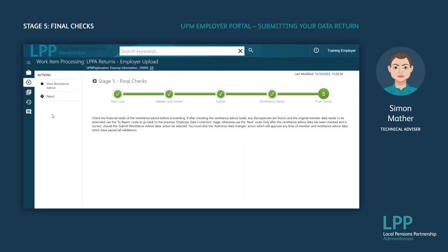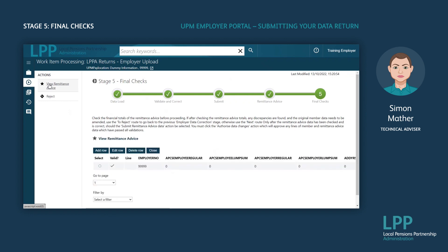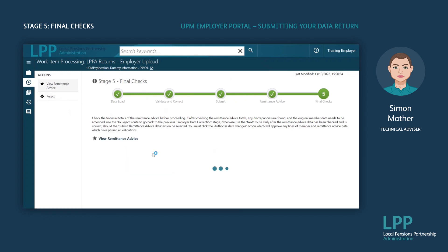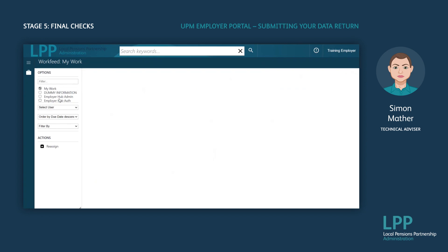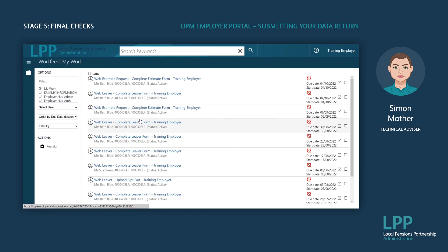This is the final step of the process. You will need to click on 'View Remittance Advice' in the actions column, then click Close, then click 'Submit Remittance Advice' in your actions column, followed by 'Submit to the Pension Fund'. This will take you back to your work feed, which means the upload process is complete and LPPA will have received it ready to process. Thanks.